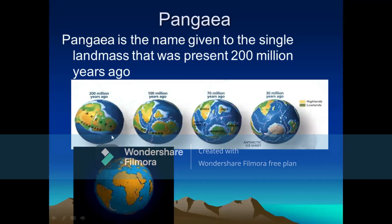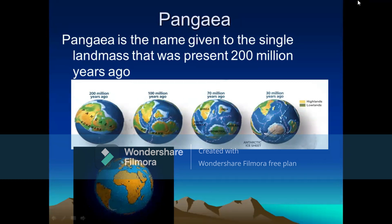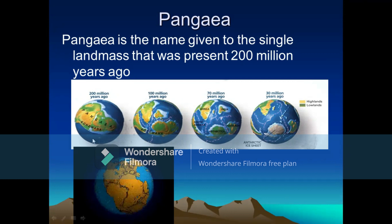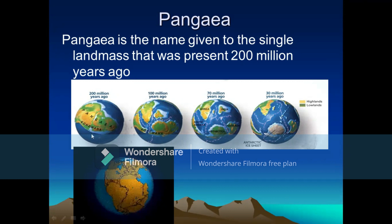Pangaea was the name given to the single landmass which was present around 200 million years ago. At that time there was a single landmass and a single ocean, which was called the Panthalassa. So this is the Pangaea wherein all the landmasses were joined together, surrounded by the huge ocean Panthalassa.